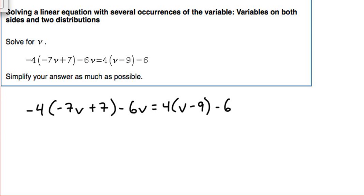So that means we're going to distribute the negative 4 to the negative 7v and also to the positive 7. We're going to distribute this positive 4 to the positive v and to the negative 9.